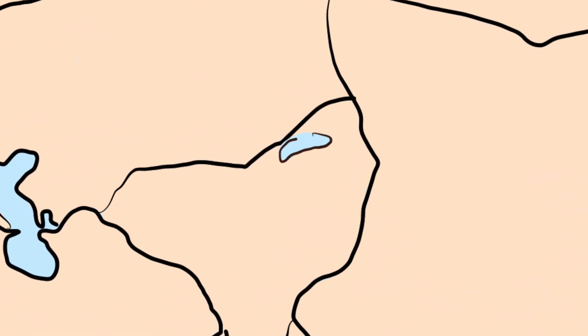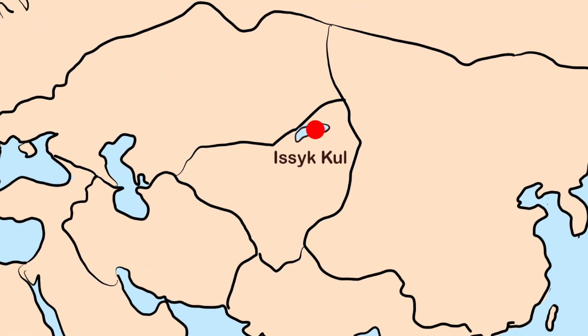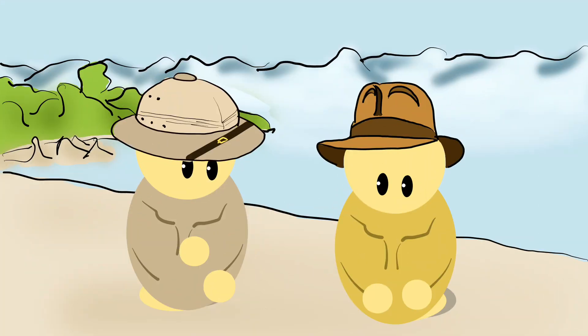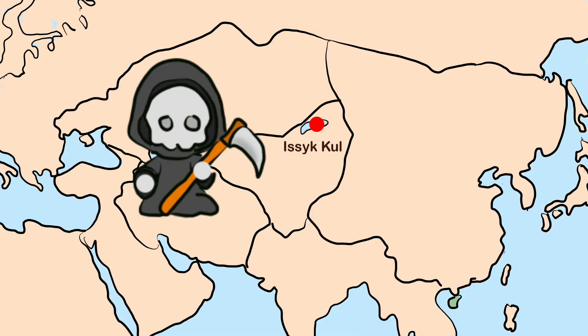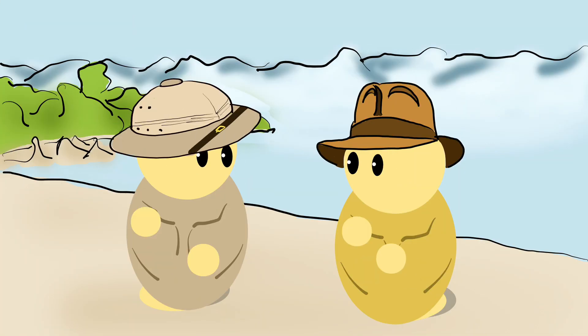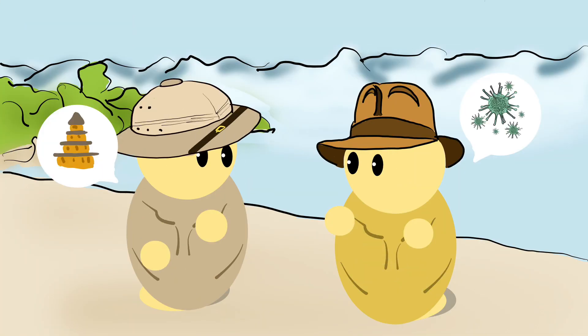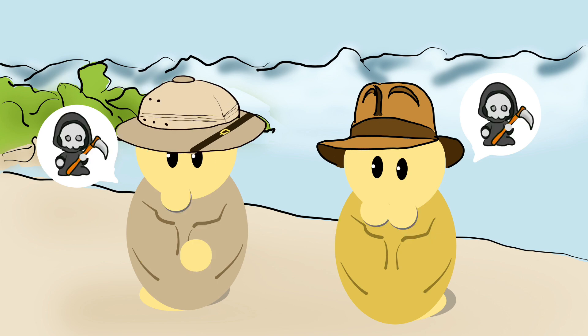Archaeological excavations reveal that Isak Kohl was a major Silk Road depot and has sometimes been cited as the origin point for the Black Death. It seems that traders from further east brought diseased fleas with them to the shores of Isak Kohl.